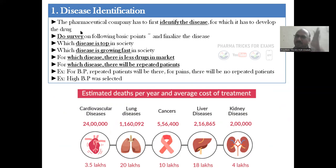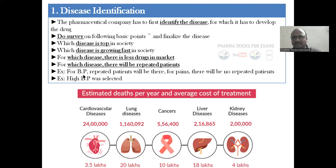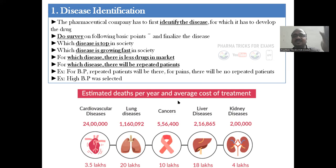Stage one is disease identification. The pharmaceutical company or scientist first identifies which disease they want to develop a drug for. You do a survey: which disease is on top, which disease is growing fast in society, which disease has fewer drugs available in the market, which disease will have repeated patients. For BP, patients take a tablet daily — repeated audience. But for painkillers, there is no repeated audience. These are statistics of cardiovascular diseases showing estimated deaths per year and cost of treatment for cardiovascular, lung, cancerous liver, and kidney diseases.